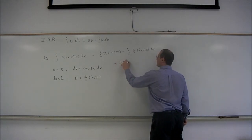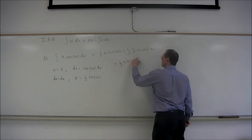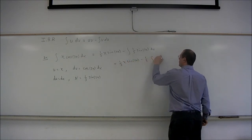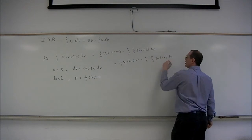So we have one-third x sine of 3x minus one-third times the integral of the sine of 3x dx.